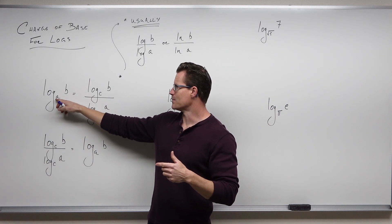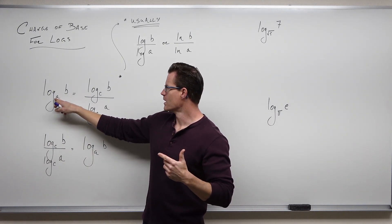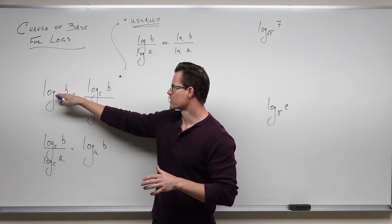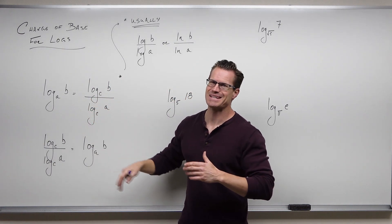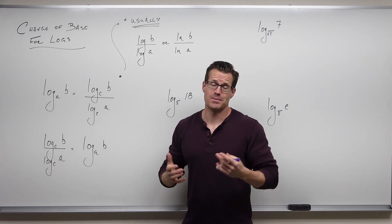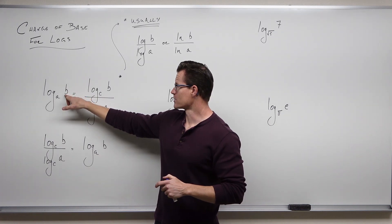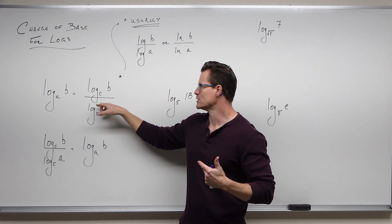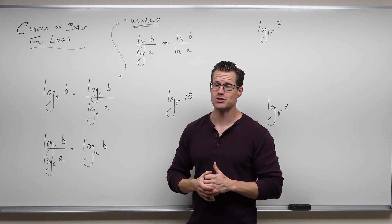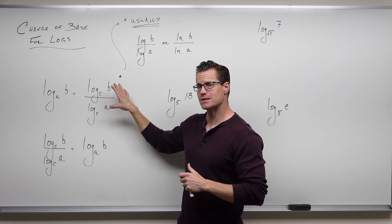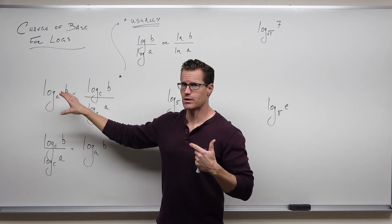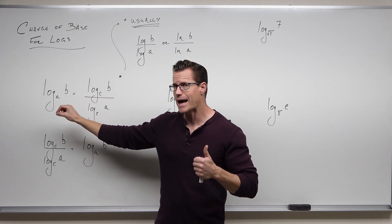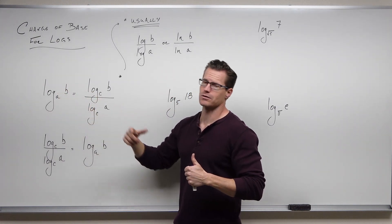I used to teach it by saying the base goes in the basement, like on the denominator. The argument is in the attic. It was super cheesy, but it actually worked. So your argument goes to the top on your numerator and your base goes to the bottom in your denominator. You can pick whatever different base you want. This creates the same exact expression. It's very useful, a different way to combine or expand logarithms.